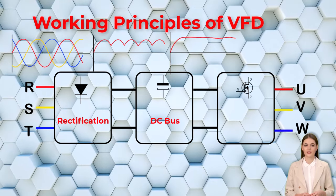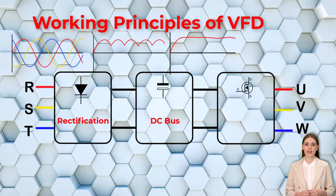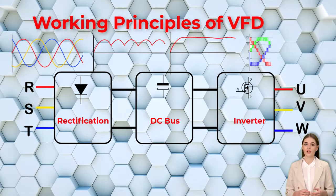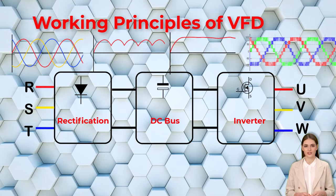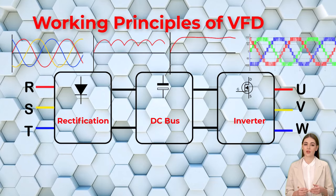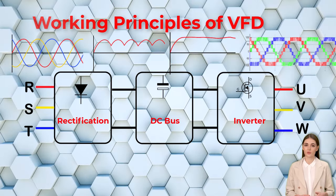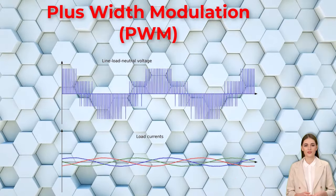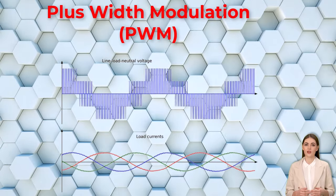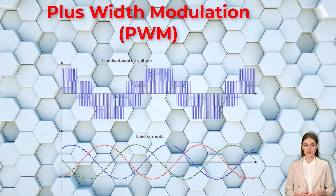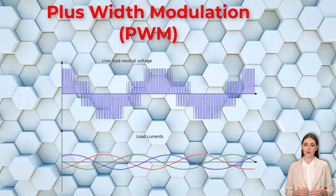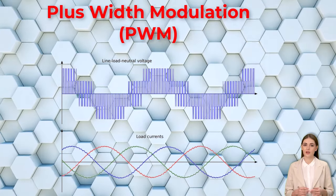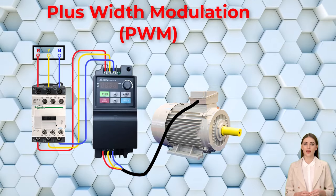The DC bus is a large capacitor that acts as temporary storage for the rectified DC power. The third stage is the inverter: the DC power from the DC bus is converted back into AC power using pulse width modulation (PWM) techniques. The inverter precisely controls the frequency and voltage of the output AC power. PWM works by rapidly switching a transistor on and off, creating a series of pulses that average out to the desired voltage level. The frequency of the pulses determines the output AC frequency, and the average voltage of the pulses determines the output voltage.